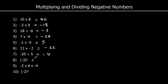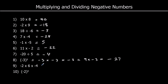Question 8: negative 3 cubed means negative 3 times negative 3 times negative 3. A negative times a negative is positive, and 3 times 3 is 9, so we've got 9 times negative 3. A positive times a negative is negative, and 9 times 3 is 27, so negative 27. Question 9: step by step — a negative times a positive is negative, and 2 times 6 is 12, so negative 12 times negative 4. A negative times a negative is positive, and 12 times 4 is 48.